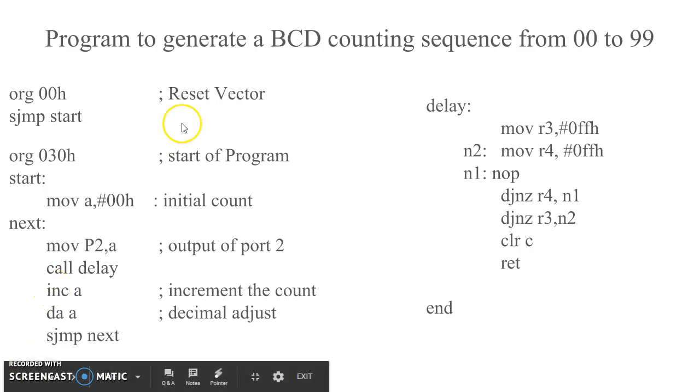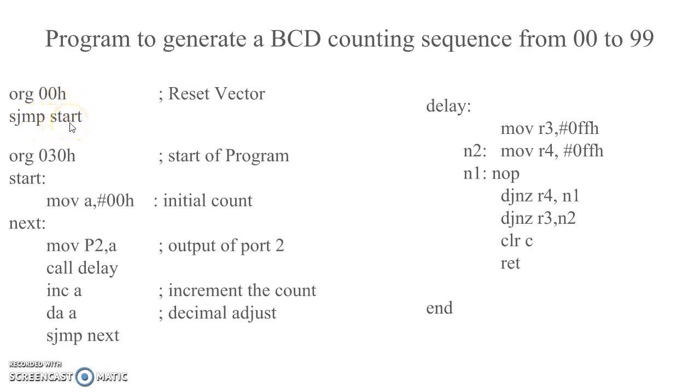Since the reset vector of 8051 is at 00, the first instruction is written at that location which jumps to the start of the program which is at 30 hex.